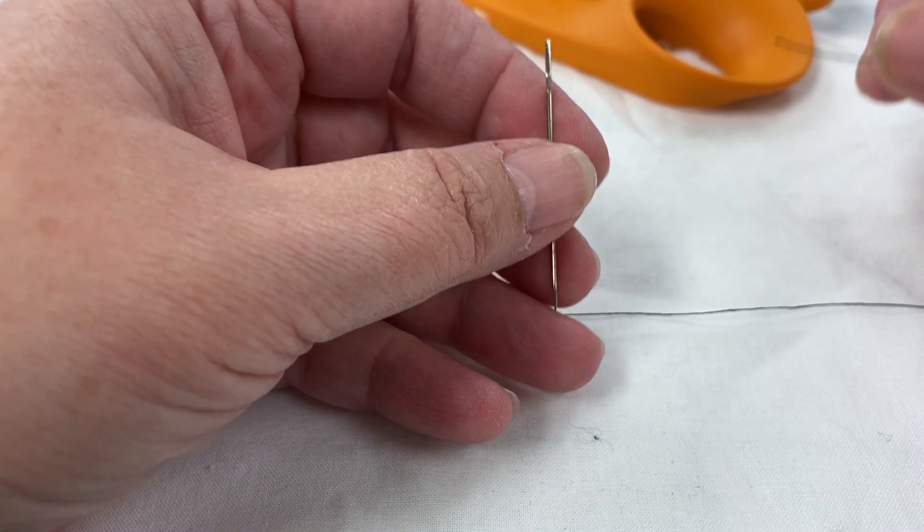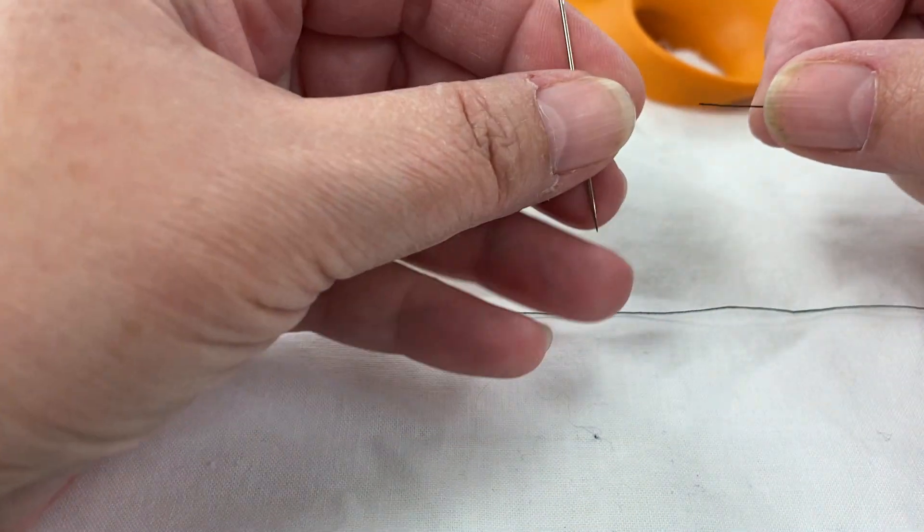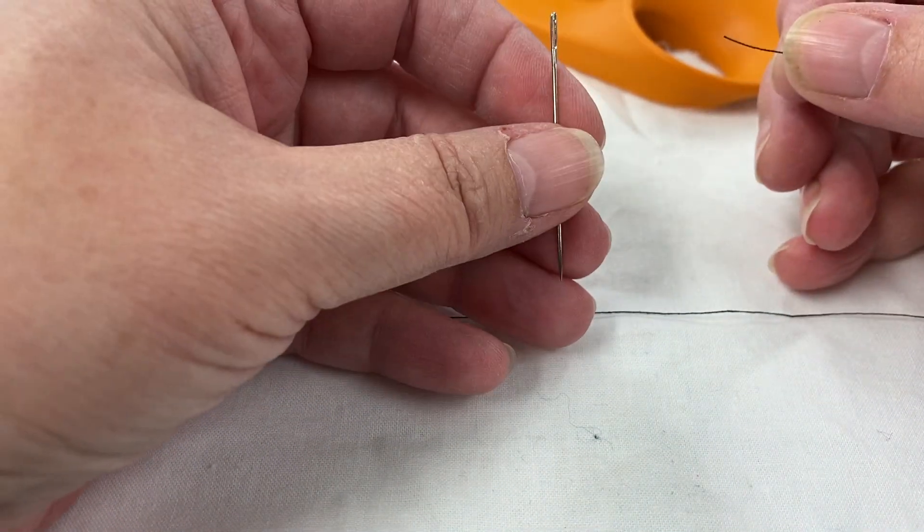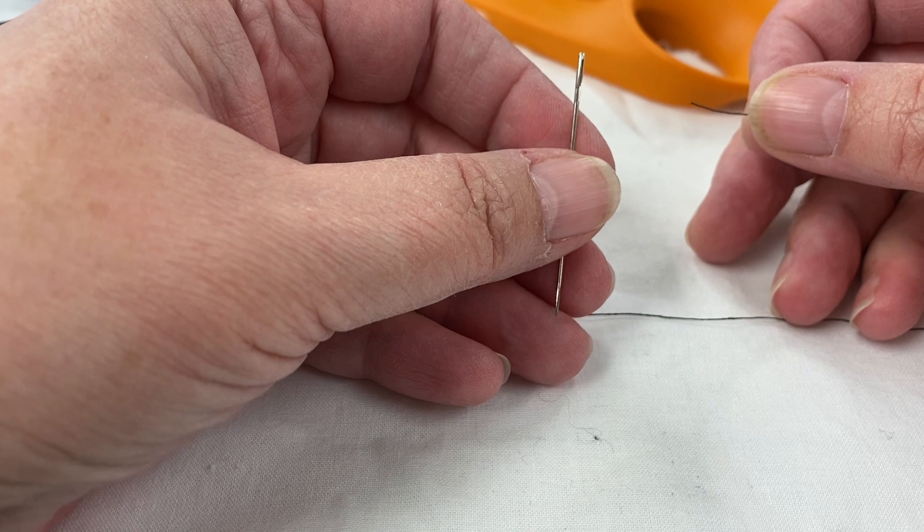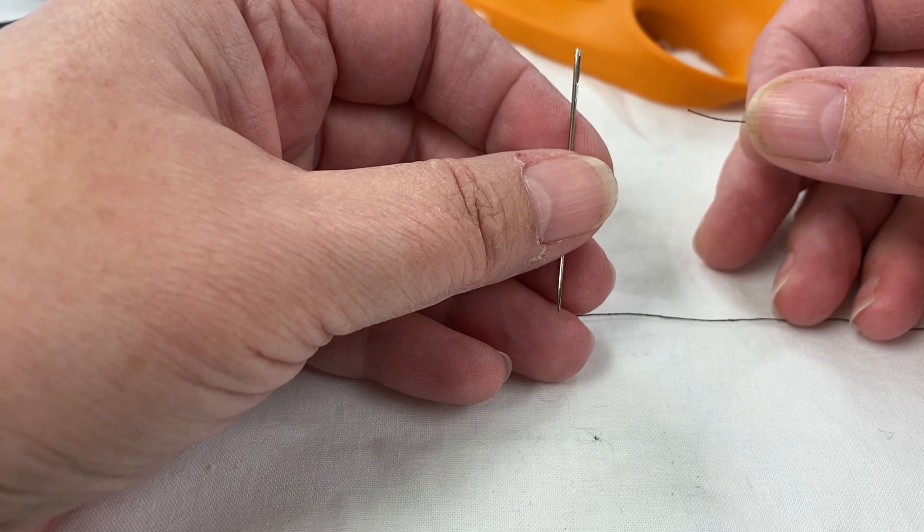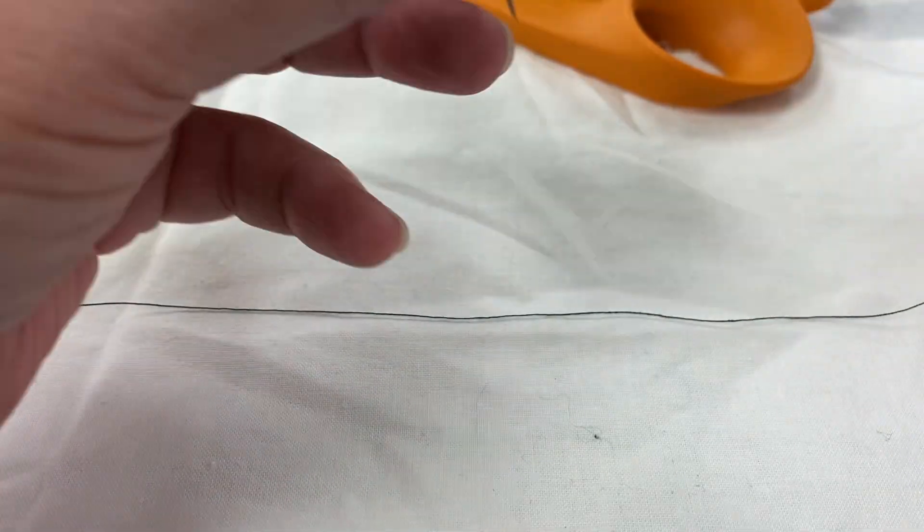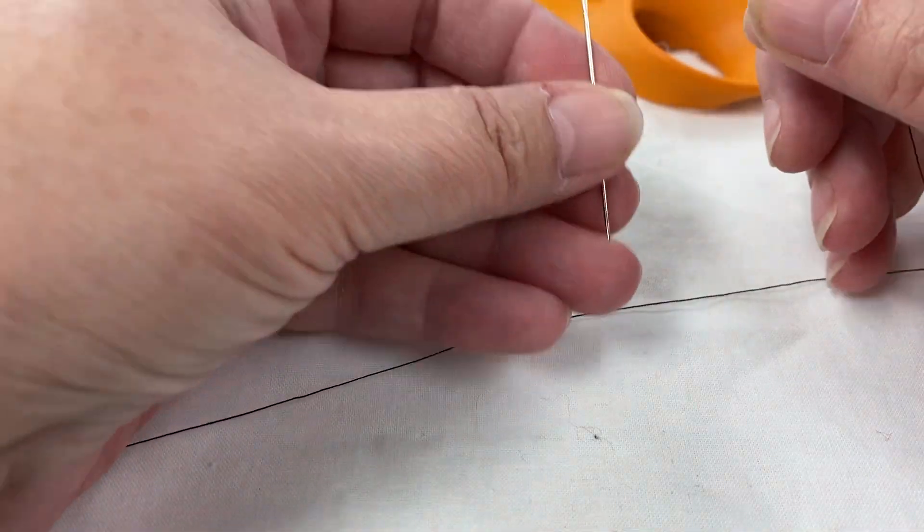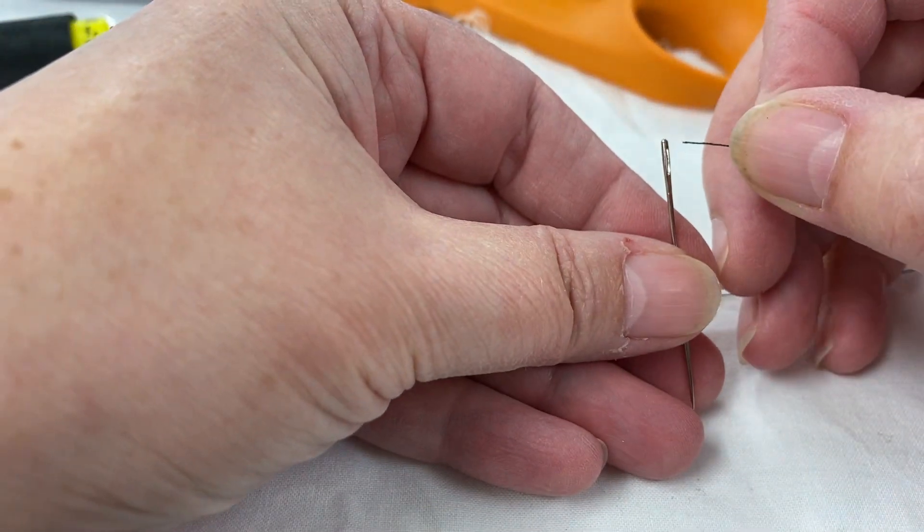You don't want to get too long of a thread. Your first instinct may be, well, if I use a longer thread then I won't have to get a new one quite as quickly. But actually, a lot of times, if the thread's too long it tends to knot up and you'll get a lot of knots and it'll make you mad. So I just don't do it. I only have about 18 inches of thread here.